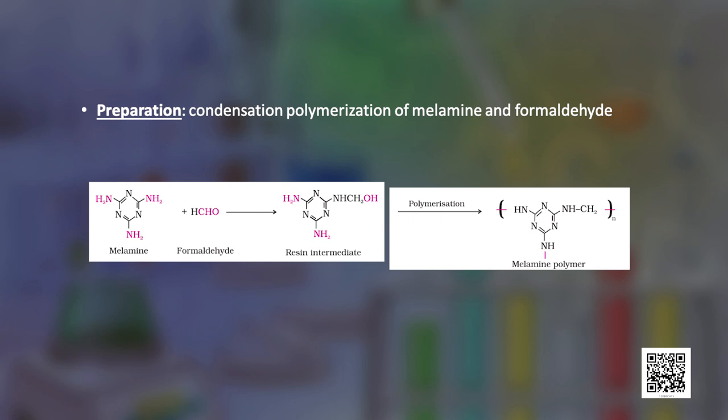A condensation polymer used in making unbreakable crockery is melamine formaldehyde polymer. It is prepared by the condensation polymerization of melamine and formaldehyde, and the sequence of steps in the reaction are depicted in the equation.